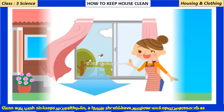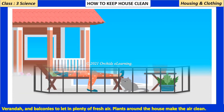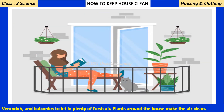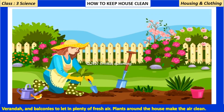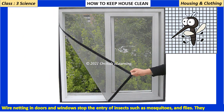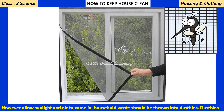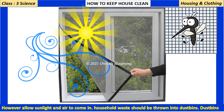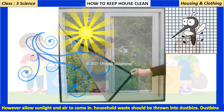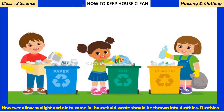Clean and fresh air keeps us healthy, so a house should have windows and open spaces such as verandas and balconies to let in plenty of fresh air. Plants around the house make the air clean, while netting on doors and windows stops the entry of insects such as mosquitoes and flies.